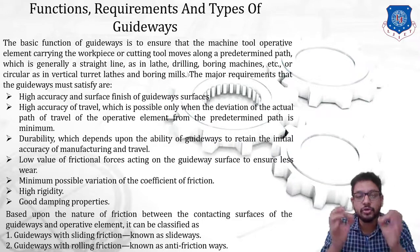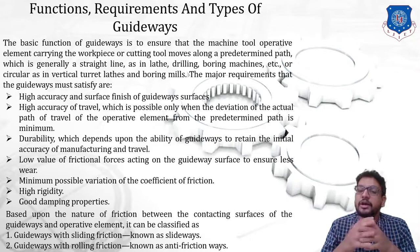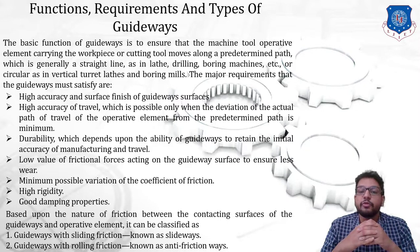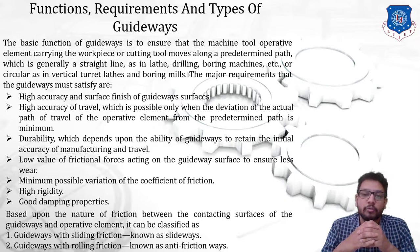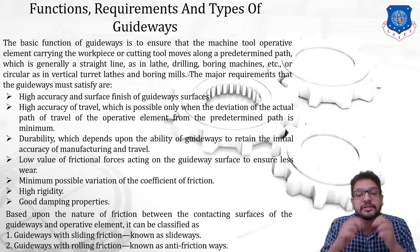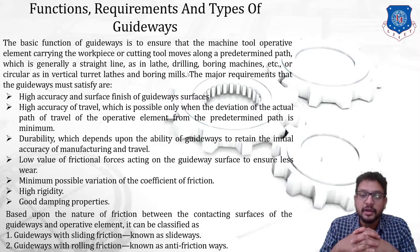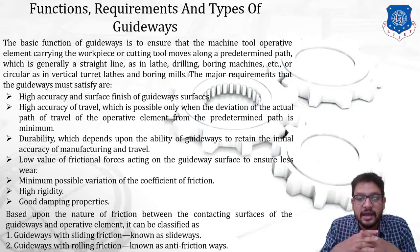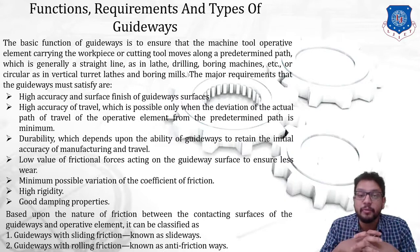A major requirement is a low value of frictional resistance acting on the guideway surface to ensure less wear and tear. Next, minimum possible variation of the coefficient of friction mu — where frictional force F equals mu times normal force N — so mu should be as minimum as possible to reduce frictional resistance. High rigidity, meaning resistance to deformation, should be much higher. Finally, good damping properties are required. Damping means a resisting force opposing a vibrating body — higher the damping force, lesser will be the vibration of the guideways.